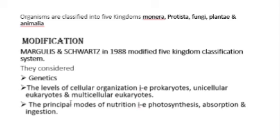Based on these two criteria, organisms were classified into five kingdoms: Monera, Protista, Fungi, Plantae, and Animalia. These are also called the five principal groups of living organisms.